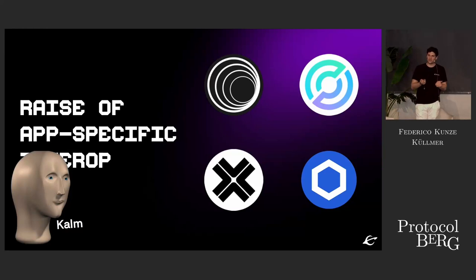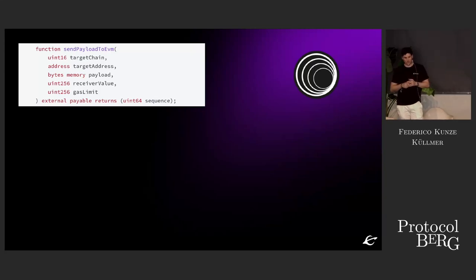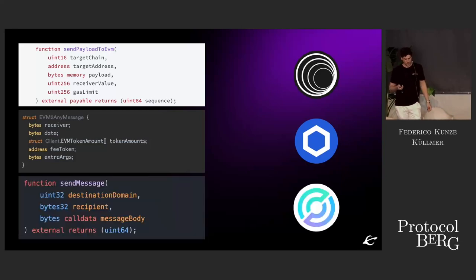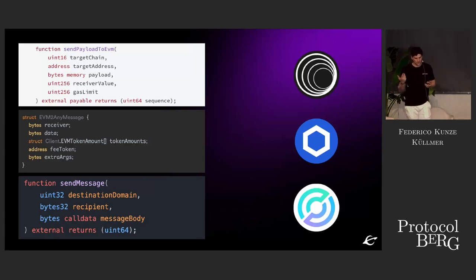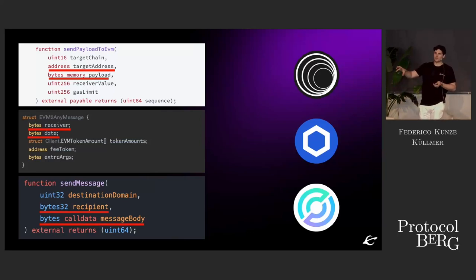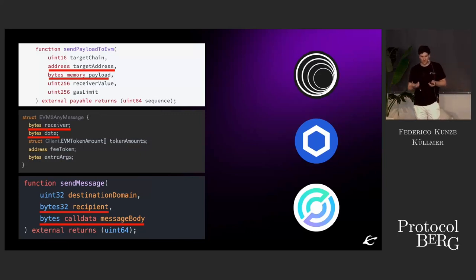Hopefully this was a solution supposed to solve the interoperability problems on the EVM layer. On Wormhole we have: send payload to EVM, target chain, target address, payload, receiver value, gas limit. On Chainlink CCIP: receiver, data, token amounts, fee token, and extra arguments for payload. And Circle CCTP: send message with destination domain, recipient, message body, and returns a sequence number. You can already see the similarities across these different application-specific interoperability solutions, where you have the target address, even the target chains — sometimes obstructed natively with the chain ID — the data for the payload, and sometimes a sequence.